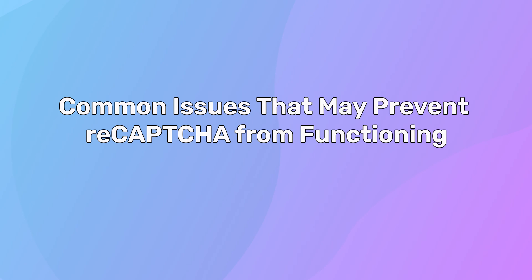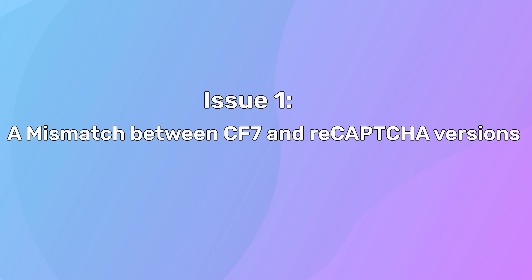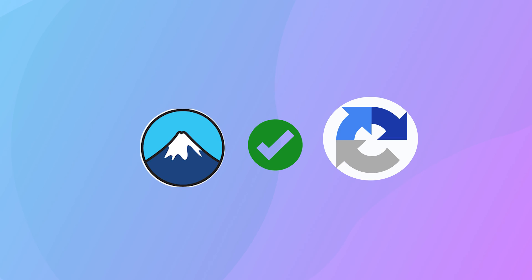Now that you've added reCAPTCHA to your contact form 7, let's talk about the common issues that prevent reCAPTCHA from functioning. ReCAPTCHA can sometimes run into problems and frustrate you — sometimes it doesn't work from the beginning, and sometimes it stops working after you make an update on your website. One of the major causes is a mismatch between contact form 7 and reCAPTCHA versions. Your reCAPTCHA might stop working after you update contact form 7, because the latest version works with reCAPTCHA version 3.